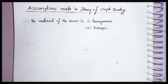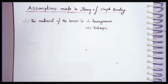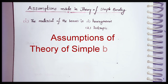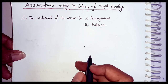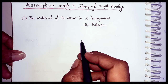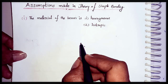Hello students, welcome to CS Academy. In this session I will discuss with you the most important assumptions that are made in the theory of simple bending. The first one is that the material of the beam is homogeneous and isotropic.